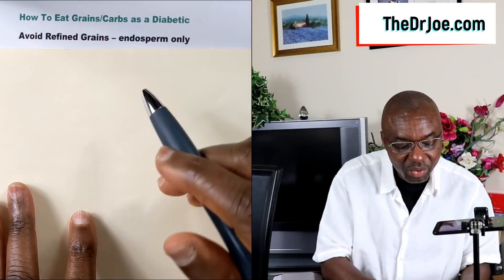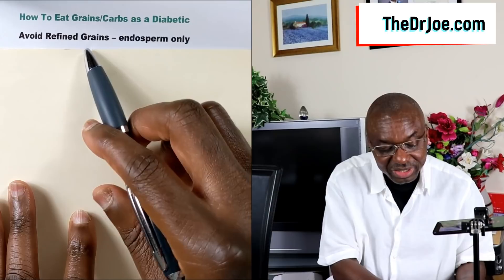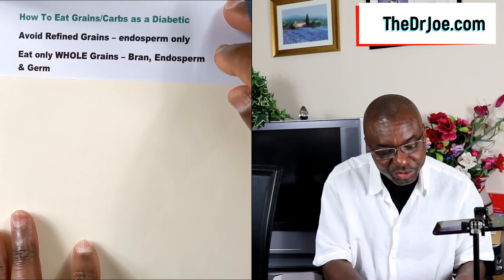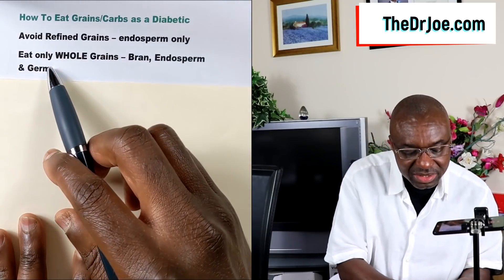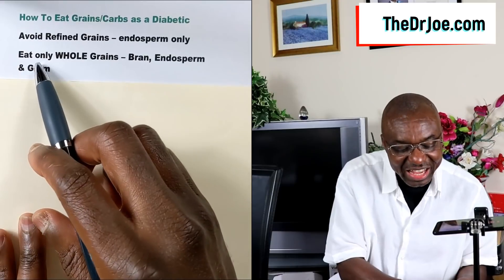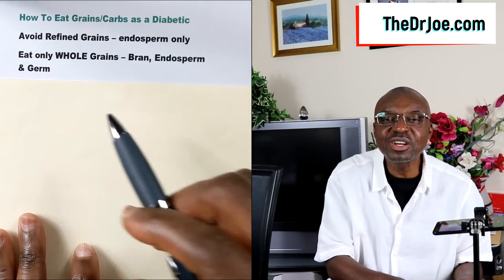Tip number one: we want to avoid refined grains, because the refined grain has just the endosperm only. That takes us to tip number two: we want to eat whole grains. The whole grain has the bran, the endosperm, and the germ. It makes sense because the whole grain has fiber, and that will slow down your blood sugar absorption when you consume the grain.